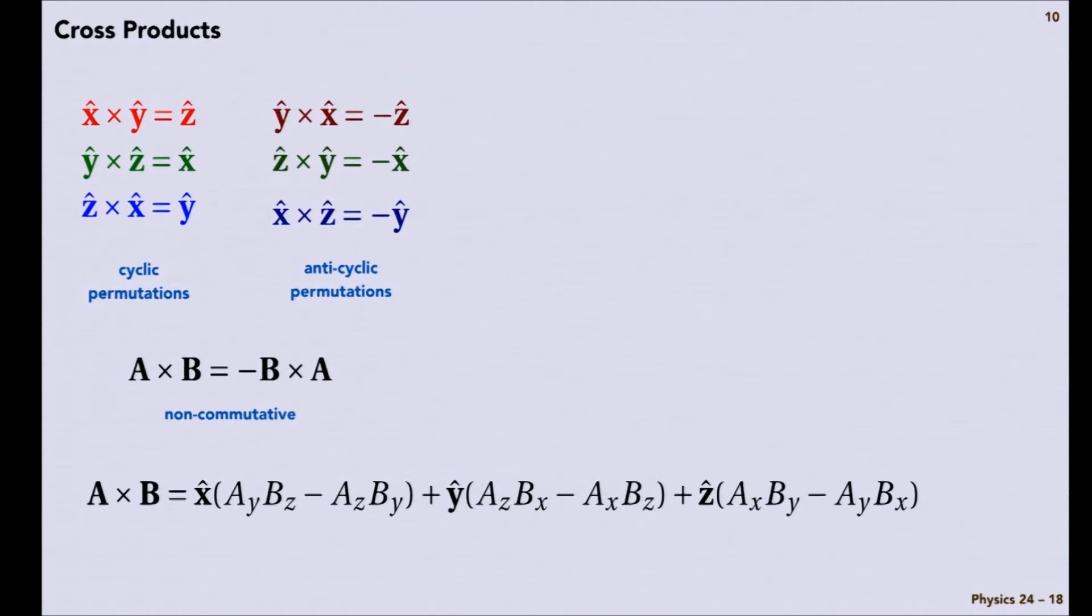I think the easy way to think about this is the unit vector comes first, then vector A, then vector B, and if x, y, z, that's a cyclic permutation, so that one comes in with a plus sign.